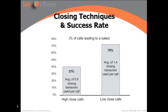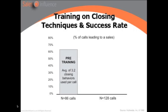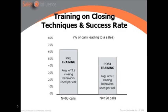Something's not right here. We've been taught to use a lot of closing behaviors, but this study shows that using too many closing behaviors will actually reduce the amount of sales you close. They then did a study on training and closing techniques. Before training, the average person used 3.2 closing behaviors and sold just over 60%. After they were trained on more closing behaviors, they used 5.6 per phone call — and their sales rate dropped. When they used less, they got more. When they used more closing techniques, they actually sold less.